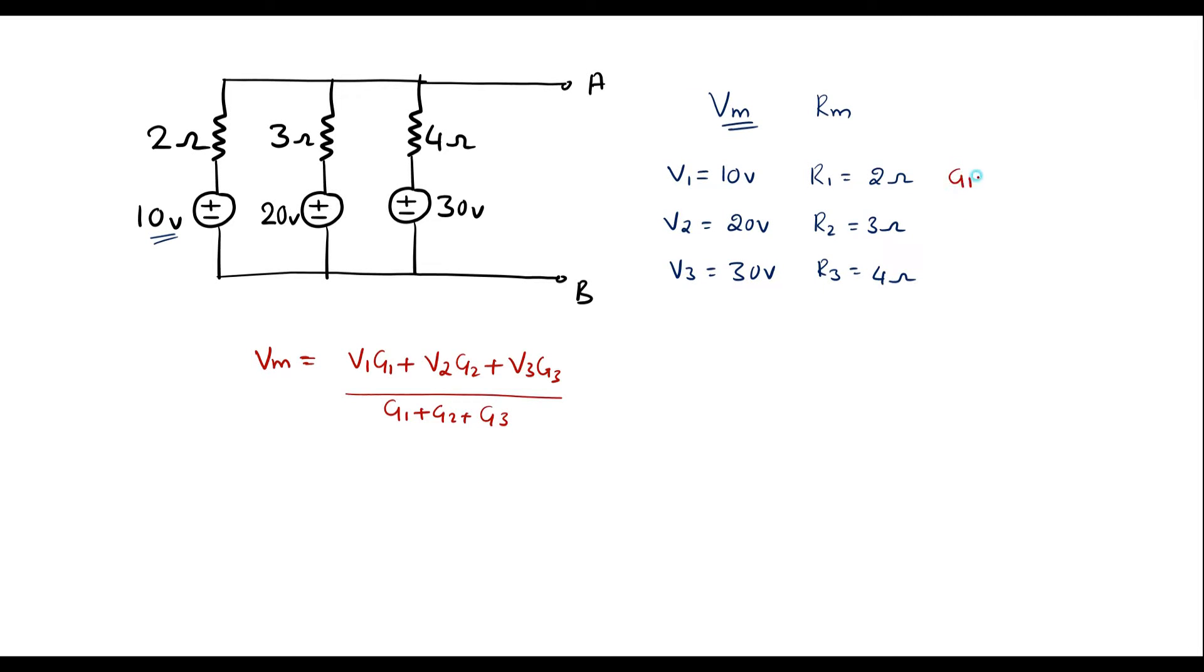So I can write G1 is equal to 1 upon 2, which is equal to 0.5. G2 is 1 by 3, which is 0.333, and G3 is 1 by 4, that is 0.25.